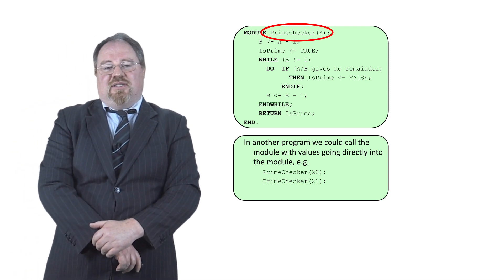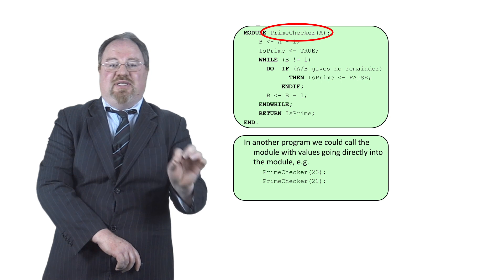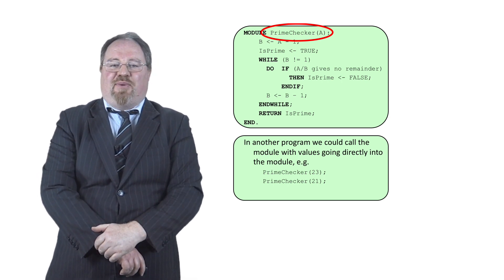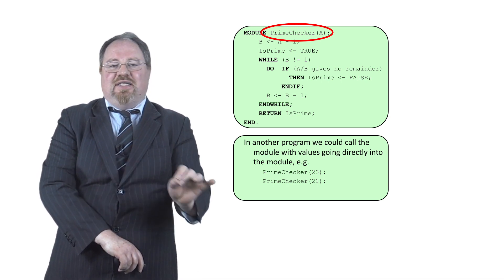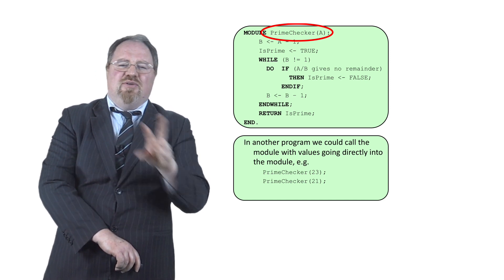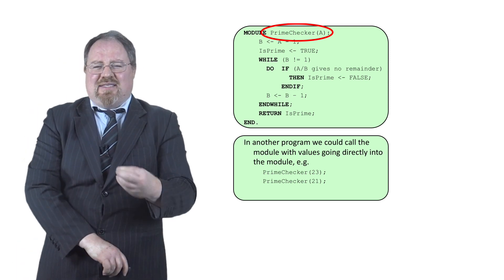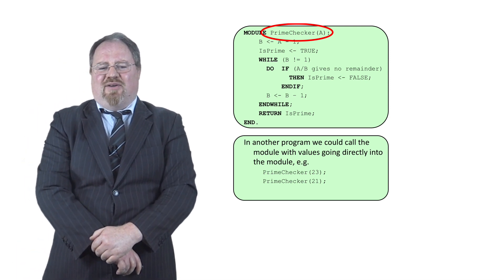Also, the benefit of this is on the command I can type in prime checker open bracket 26 and I can check if that's prime as well. So because we're not reading in the value in prime checker anymore, that means that module prime checker can be used in a variety of different ways, which is really excellent coding and much more software reuse.